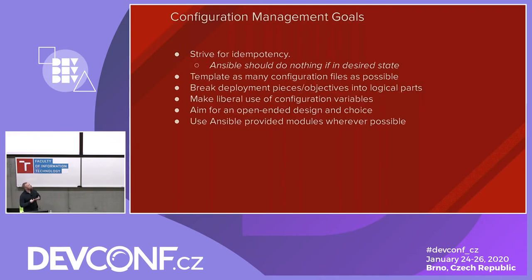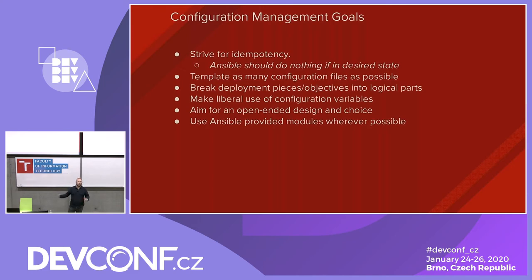Some high-level goals we strive for when writing automation: first, we want to strive for idempotency. You're not always going to achieve it, but you want to strive for it. It's the idea that you can run a repeated task many times and if it's already in its desired state, nothing should change. When you write an Ansible playbook, even as the scope grows substantially, you always want to try to maintain that idempotent nature — if you run it multiple times, nothing breaks.